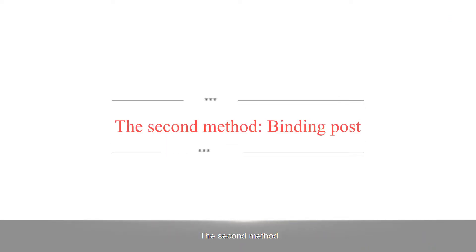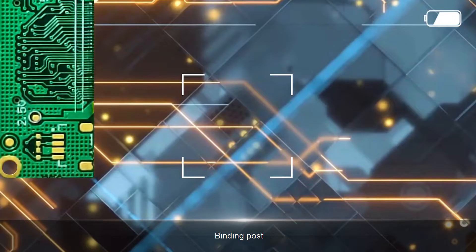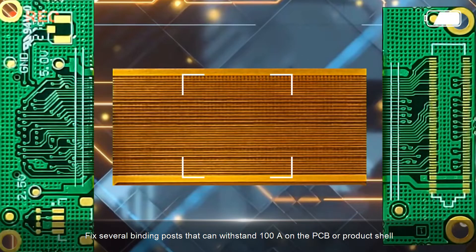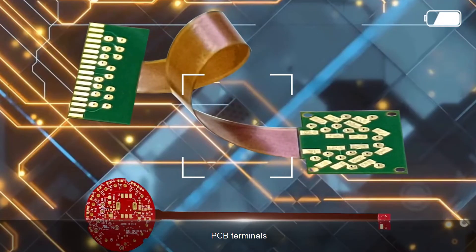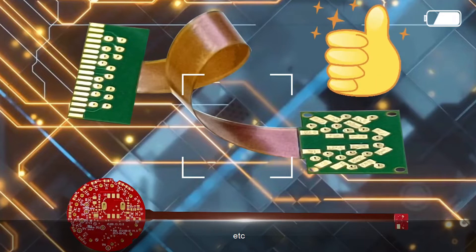The second method is binding post. Fix several binding posts that can withstand 100A on the PCB or product shell, such as surface mount nuts, PCB terminals, copper posts, etc.